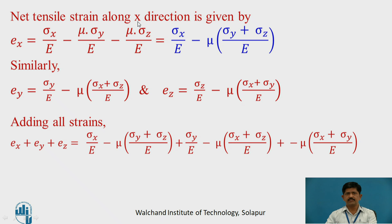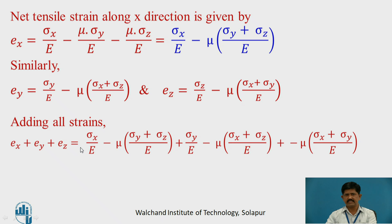The net tensile strain along x direction: ex equals sigma x/E minus mu·sigma y/E minus mu·sigma z/E, which simplifies to sigma x/E minus mu·(sigma y plus sigma z)/E. Similarly, ey equals sigma y/E minus mu·(sigma x plus sigma z)/E, and ez equals sigma z/E minus mu·(sigma x plus sigma y)/E.